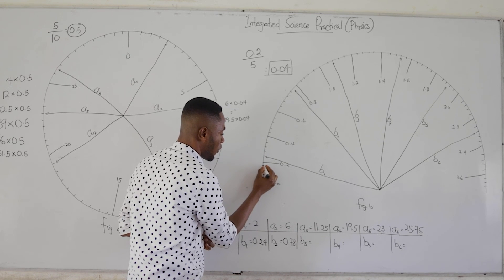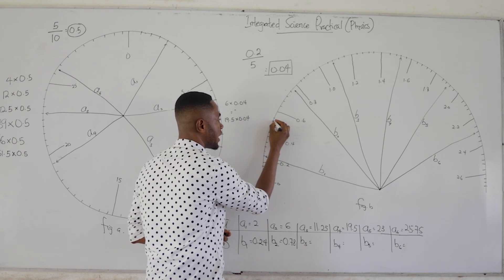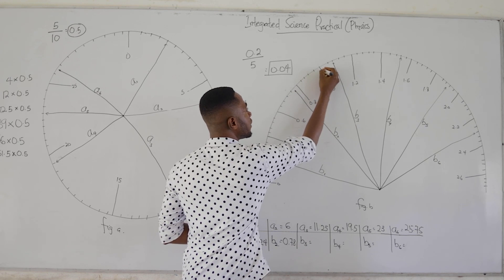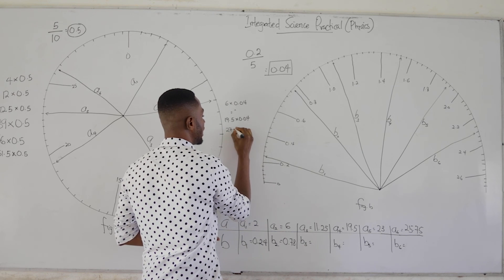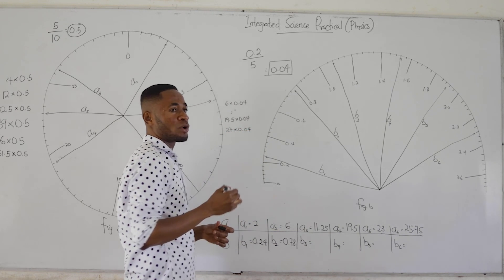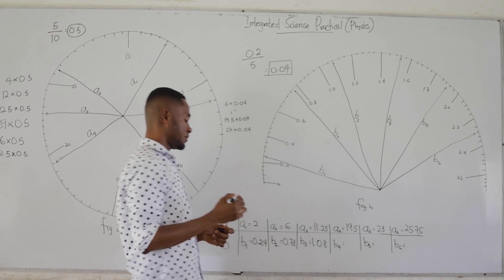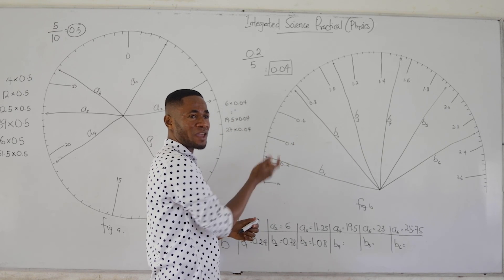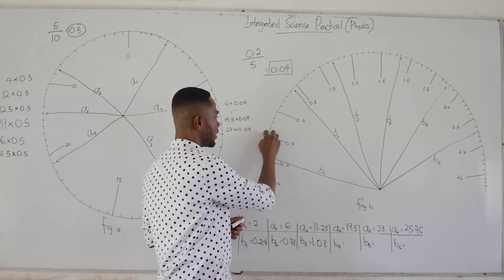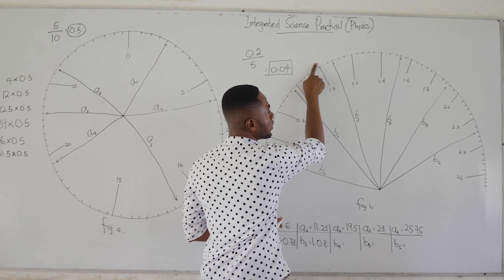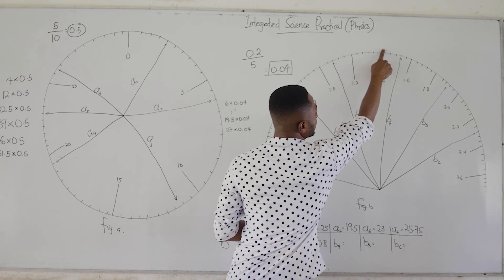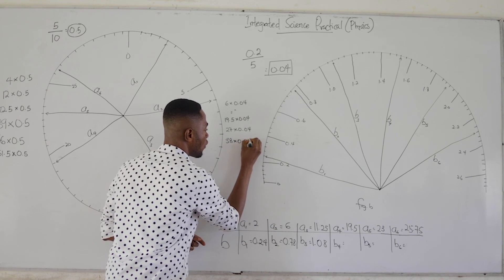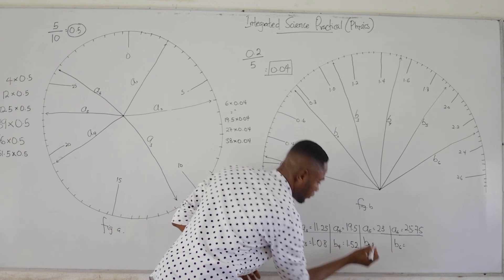For b3: counting the graduations gives us 27. So 27 times 0.04 gives us 1.08. Moving on to b4, noting that from mark to mark we have five graduations. Counting gives us 38. So 38 times 0.04 gives us 1.52.